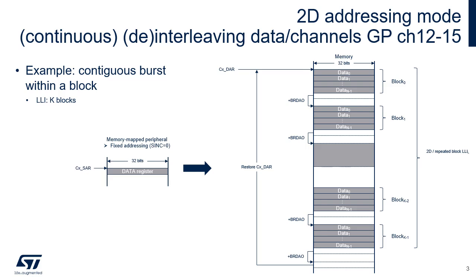This figure highlights the repeated block mode and the stride between blocks. This mode is useful for transferring the contents of a peripheral data register, typically an input FIFO, to non-contiguous buffers in memory. After filling a block of N words, the DMA channel automatically adds the BDRA0 signed offset to the current address, jumping to the next buffer in memory.